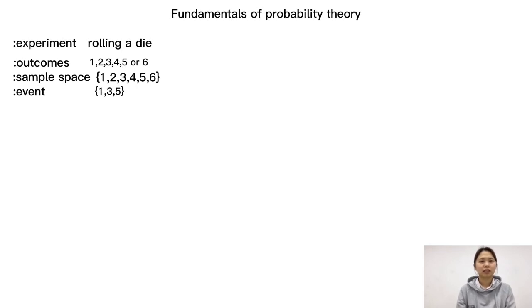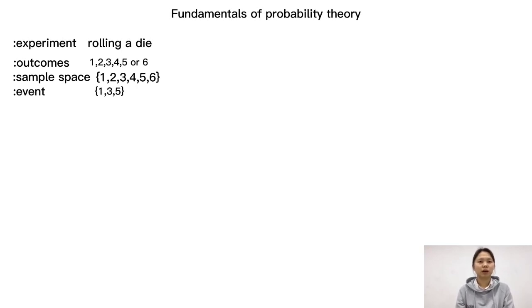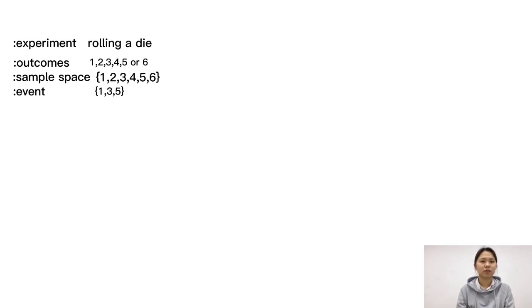An event is a subset of a sample space. For example, the event of an odd number being rolled on a die is the set {1, 3, 5}.